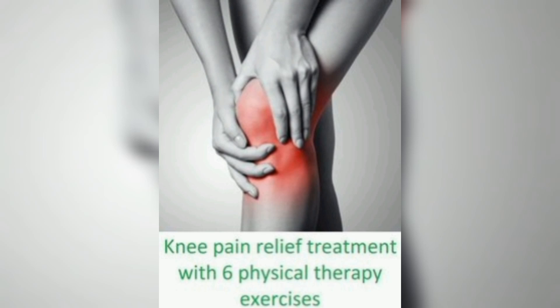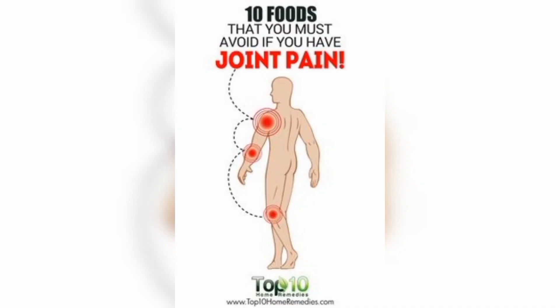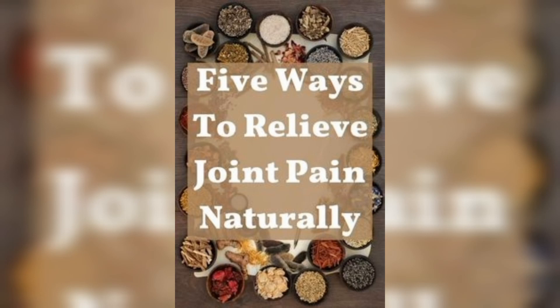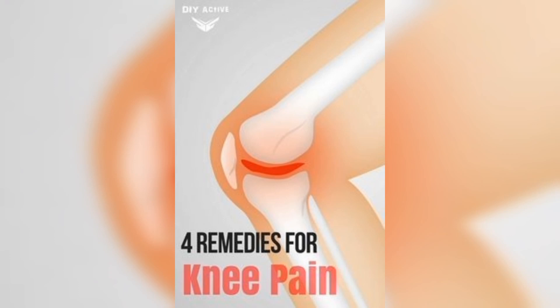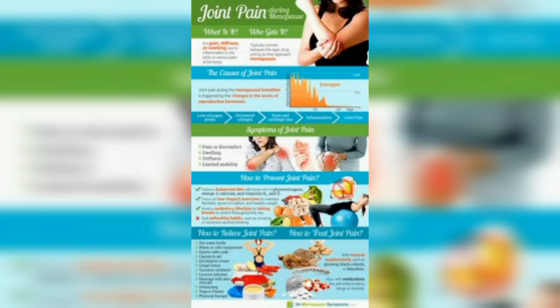They can also be caused by injury or infection. Inflammatory conditions such as lupus and ankylosing spondylitis can cause joint pain by inflaming the joint and surrounding tissue. Lupus is an autoimmune disease that can affect multiple organs and tissues, including the joints. Ankylosing spondylitis is a type of arthritis that primarily affects the spine. Injuries such as sprains, strains, and fractures can cause joint pain by damaging the muscles, ligaments, and bones around the joint. These types of injuries are common in sports and other physical activities.